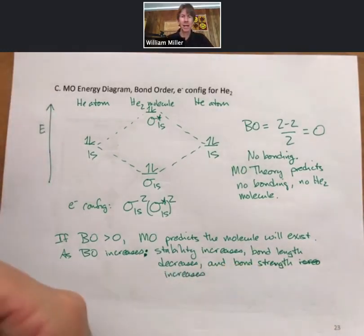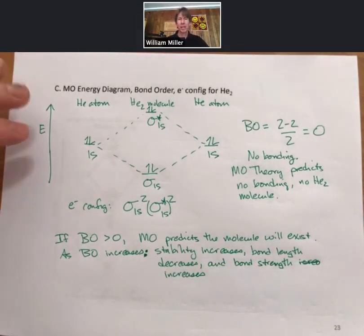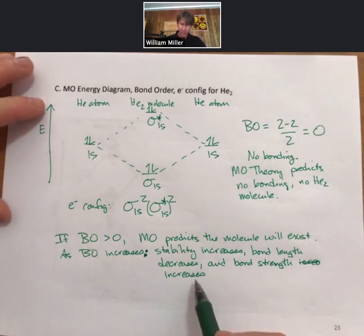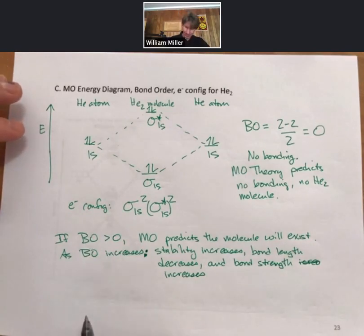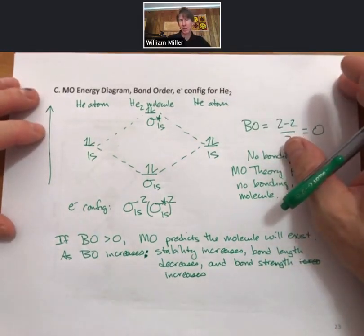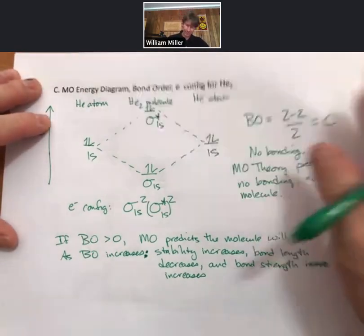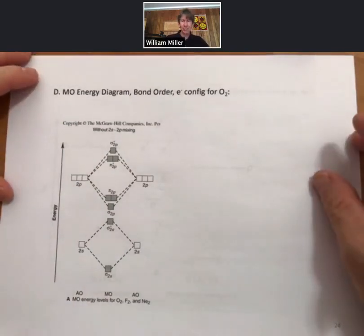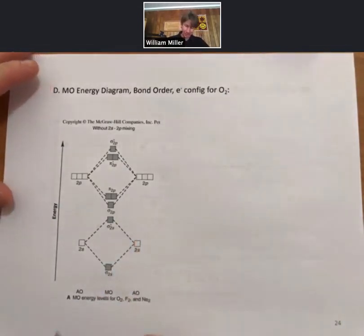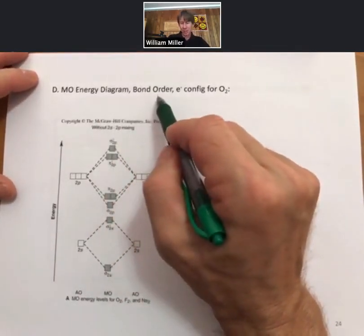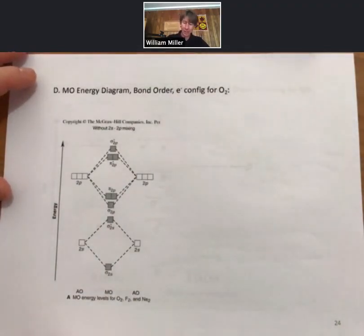This is nothing new because we've talked about these trends from drawing Lewis structures, with a double bond being shorter and stronger than a single bond, and a triple bond even more so. All those trends still apply to molecular orbital theory. We'll also see non-integer bond orders.